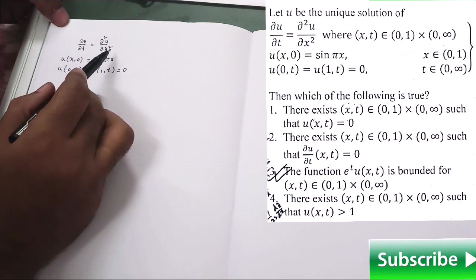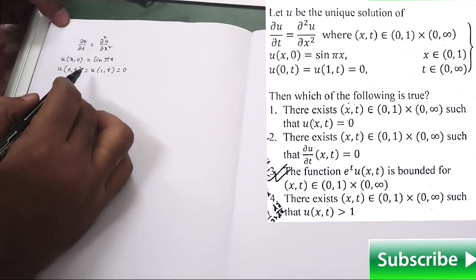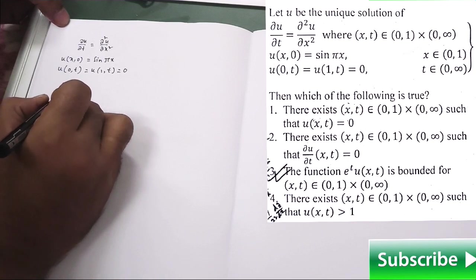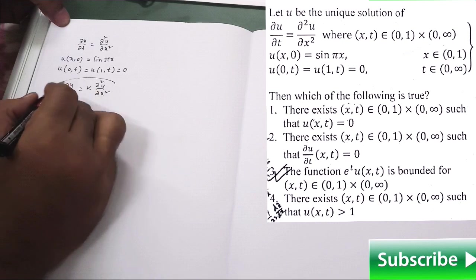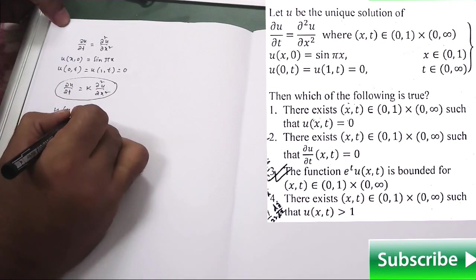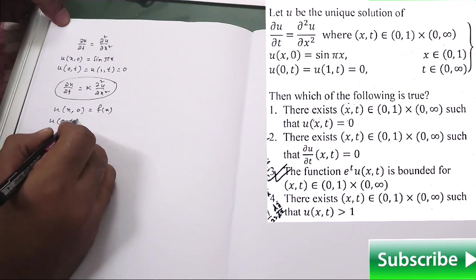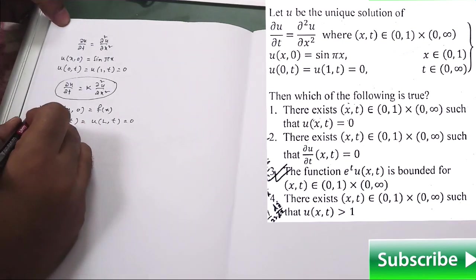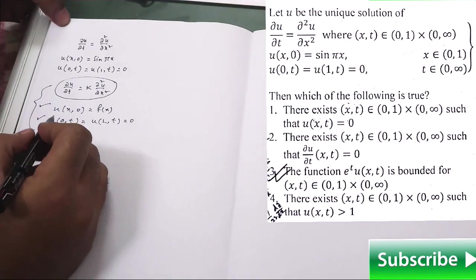This is the given homogeneous heat equation along with these conditions. To solve this kind of problem, you should know what is the general solution of homogeneous heat equation. For that purpose, simply ∂u/∂t = k ∂²u/∂x², along with u(x,0) some function is given to you as f(x) and u at this is equal to 0. This is the boundary condition and this is the initial condition. So this is a standard homogeneous heat equation and its solution you have to remember.